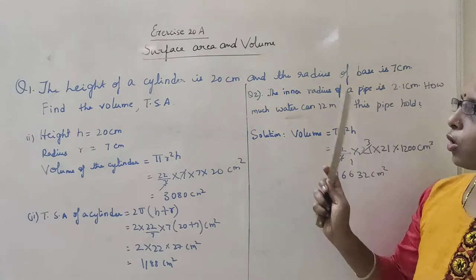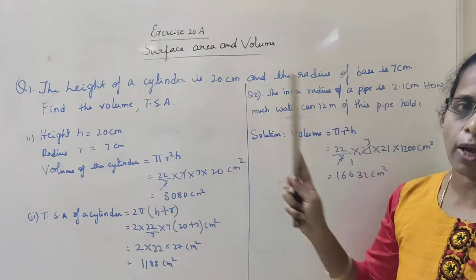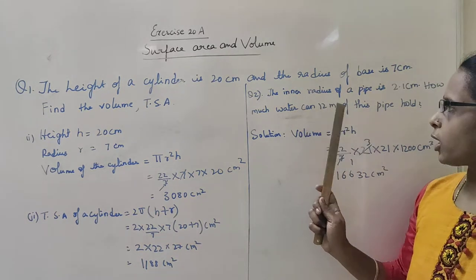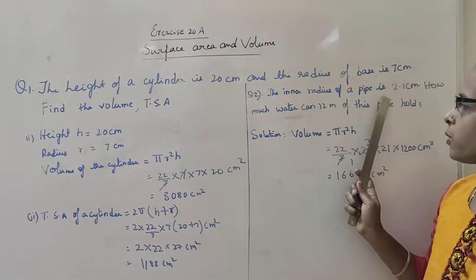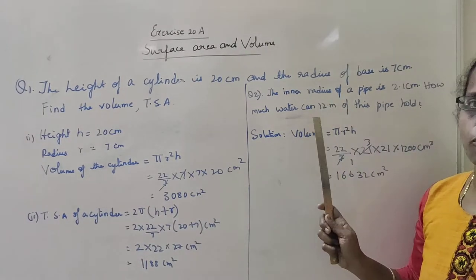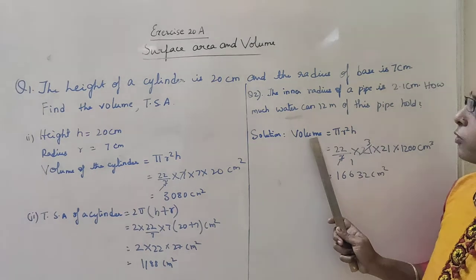In this problem, they have not given what you have to find out. So we have to just analyze the sum and substitute the formula. What have they given here? The inner radius of the pipe is 2.1 cm. How much water will it hold? That means you have to find out the volume of the cylinder.